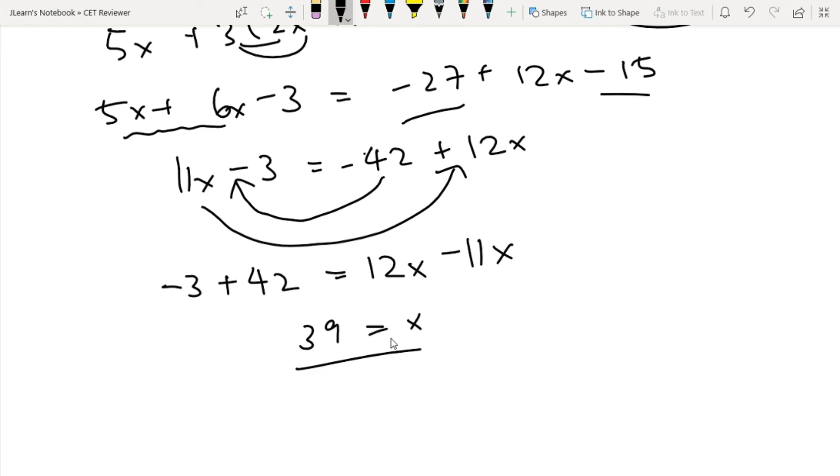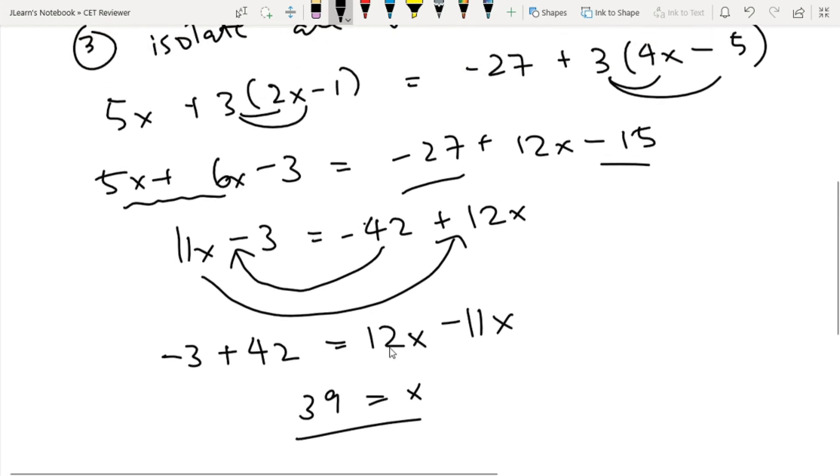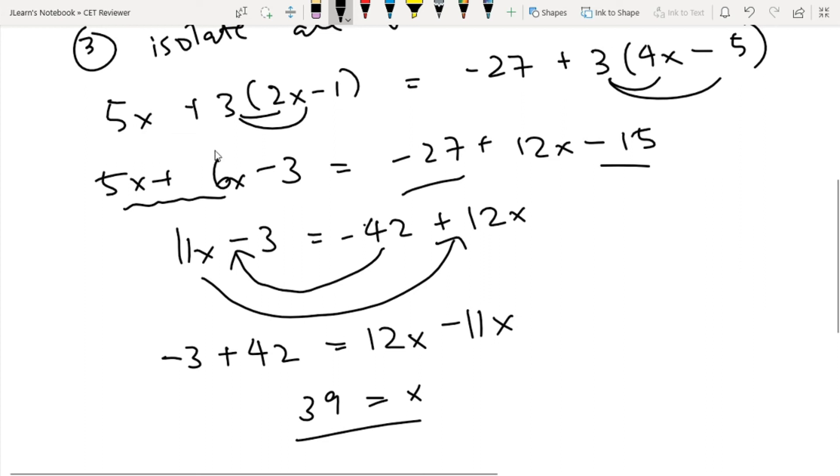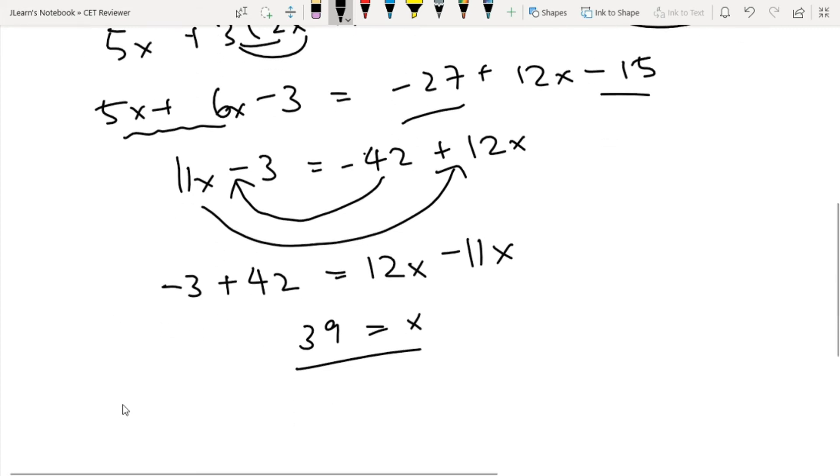So the solution to our equation from earlier, 5X plus 3 times 2X minus 1 is equal to negative 27 plus 3 times 4X minus 5, is 39. Let's have a much more difficult example.